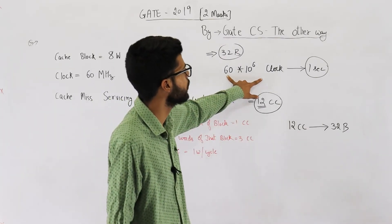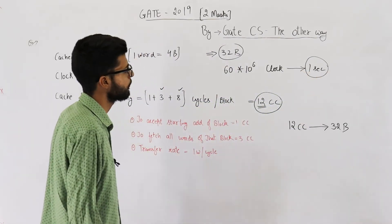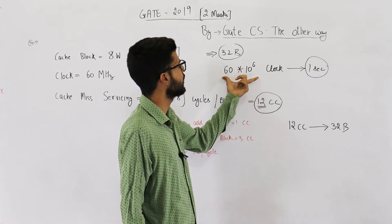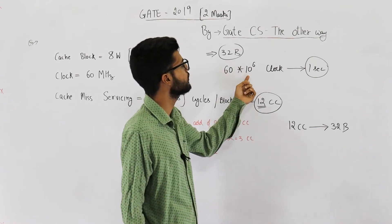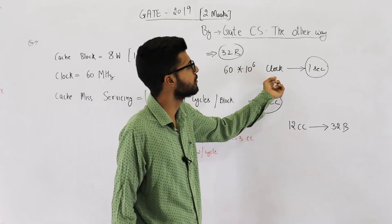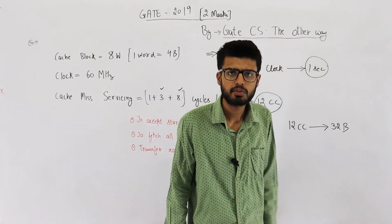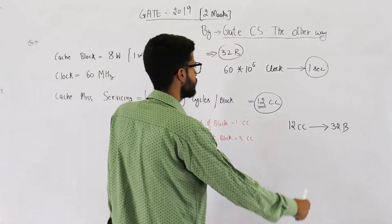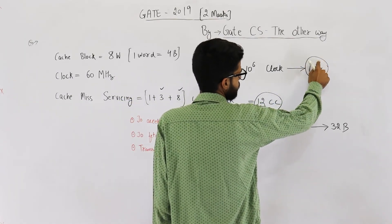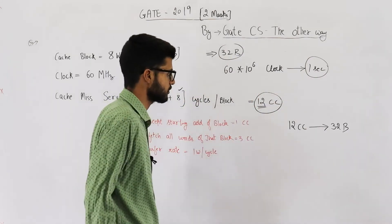Also, relation in number of clocks and one second is known. So, the job is simple. If we find out how many bytes can be transferred in 60 into 10 raised to the power 6 clock cycles, can we say it would be very similar to number of bytes transferred in one second? Because these many clocks anyways take this much time. So, instead of finding the number of bytes transferred in one second, let's find out the number of bytes transferred in 60 into 10 raised to the power 6 clocks.